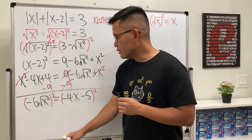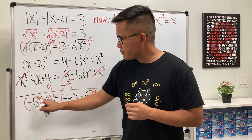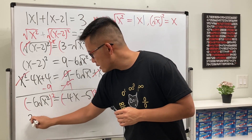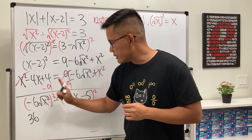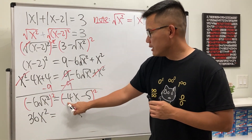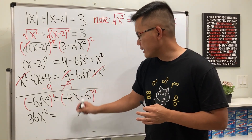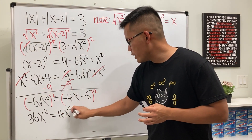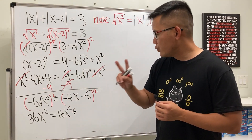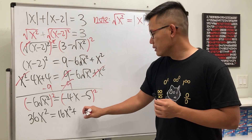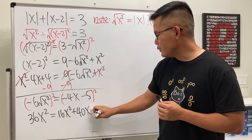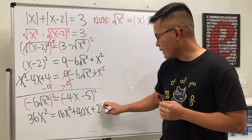Squaring both sides: (−6)² = 36, the square root and square cancel leaving x², so 36x² on the left. On the right: (−4x − 5)² = (−4)²x² + 2(4)(5)x + 5² = 16x² + 40x + 25, since both terms are negative their product is positive.